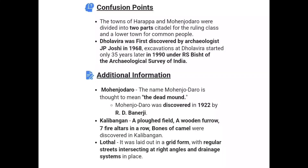Confusion points: The towns of Harappa and Mohenjo-daro were divided into two parts — the citadel for the ruling class and the lower town for common people. Mohenjo-daro's name is thought to mean 'the Mound of the Dead'. Mohenjo-daro was discovered in 1922 by R.D. Banerji. In Kalibangan, a ploughed field, wooden furrow, seven fire altars in a row, and bones of camels were discovered. Lothal was set out with triangular streets intersecting at right angles and a drainage system.